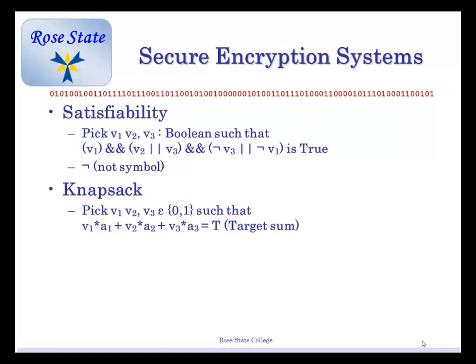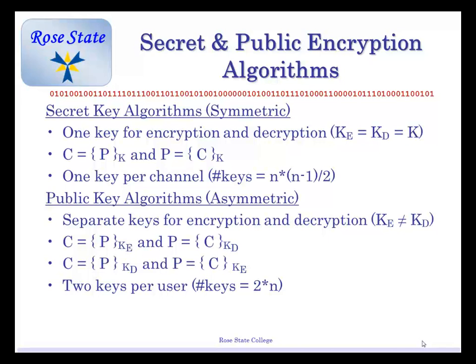You will have to do an assignment on this. I've had students write Java programs on this in the past, but I'll change it up a little. Let's talk about secret and public key encryption systems. Symmetric — the same key for encryption and decryption, so the encryption key equals the decryption key. There's only one key. One key per channel, so the number of keys needed is n times (n minus 1) divided by 2.